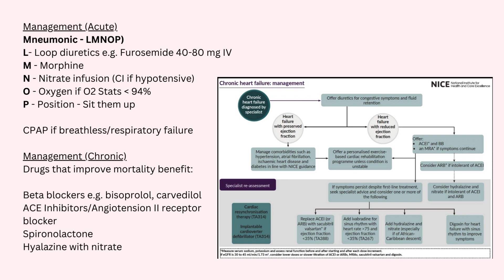For chronic heart failure, conservative management is always to give an annual influenza vaccine with a one-off pneumococcal vaccine. We can then split management based on whether the heart failure has a reduced ejection fraction — less than 40% — or a preserved ejection fraction — more than 40% — as guided by pro-BNP. If their ejection fraction is reduced, the first line is an ACE inhibitor with a beta blocker, such as ramipril with bisoprolol. If they're not tolerating the ACE inhibitor, switch to an angiotensin II receptor blocker such as losartan or candesartan. If they're not tolerating that, switch to hydralazine with nitrate — particularly for patients of Afro-Caribbean descent.